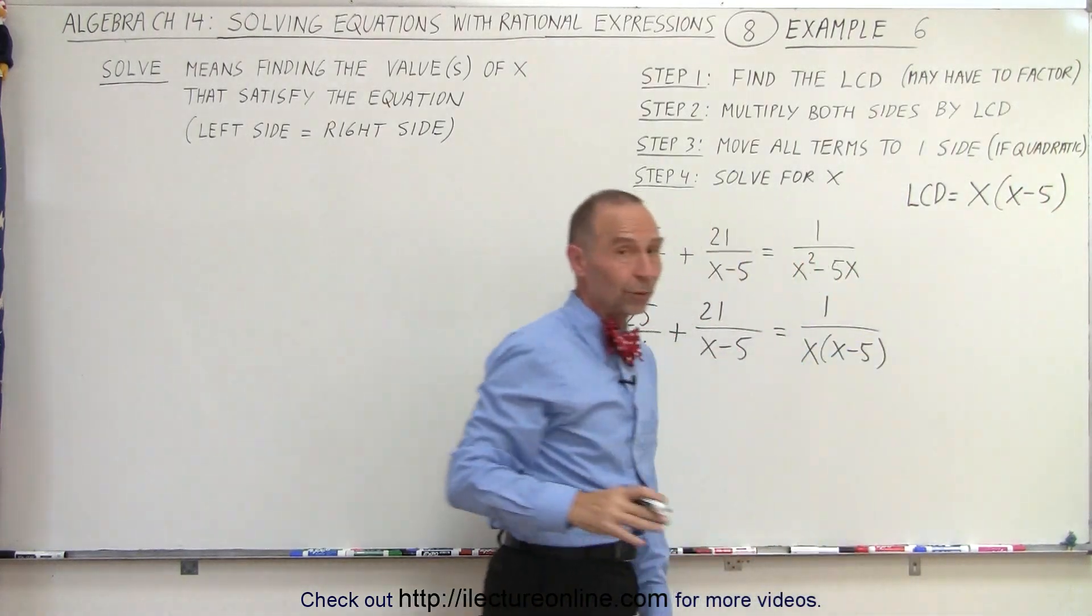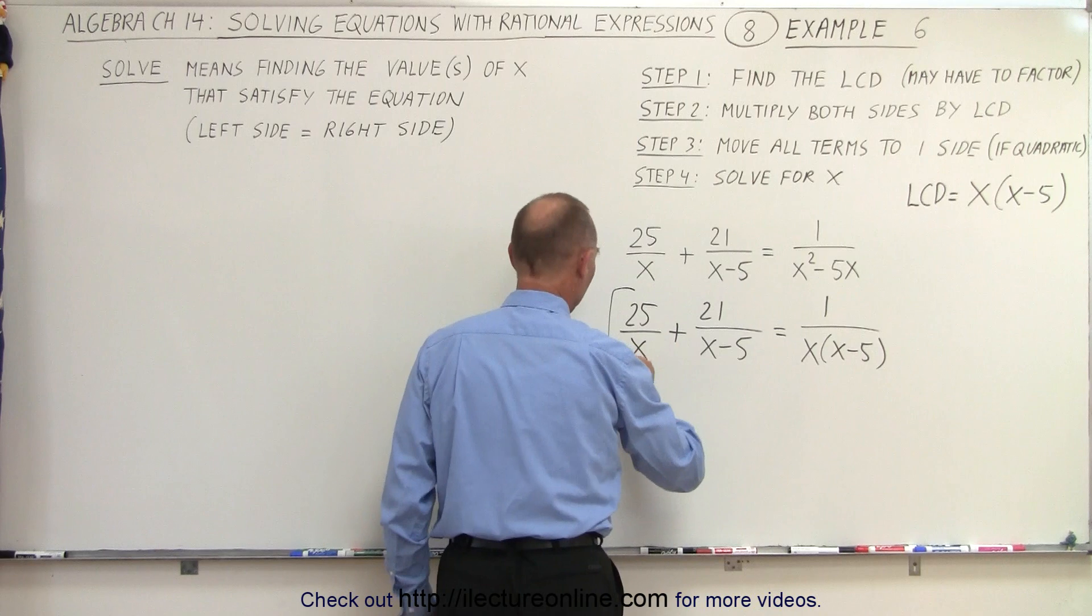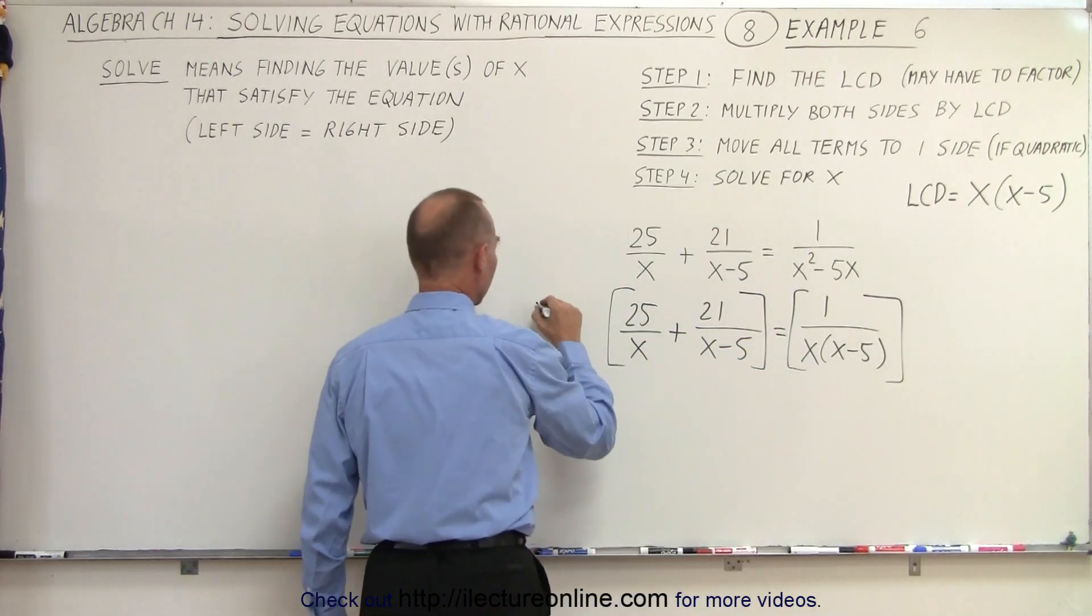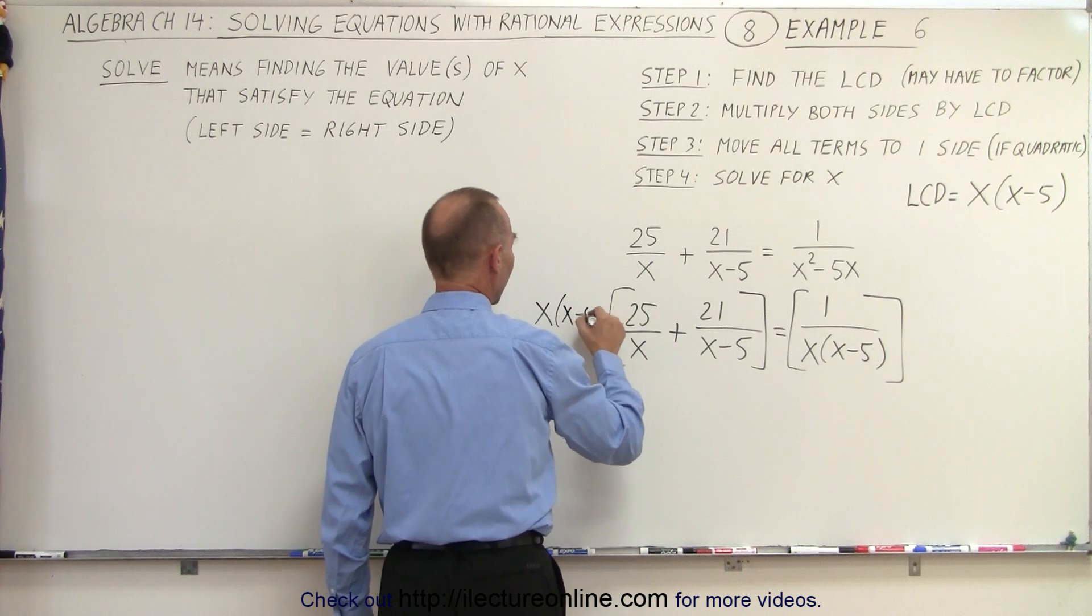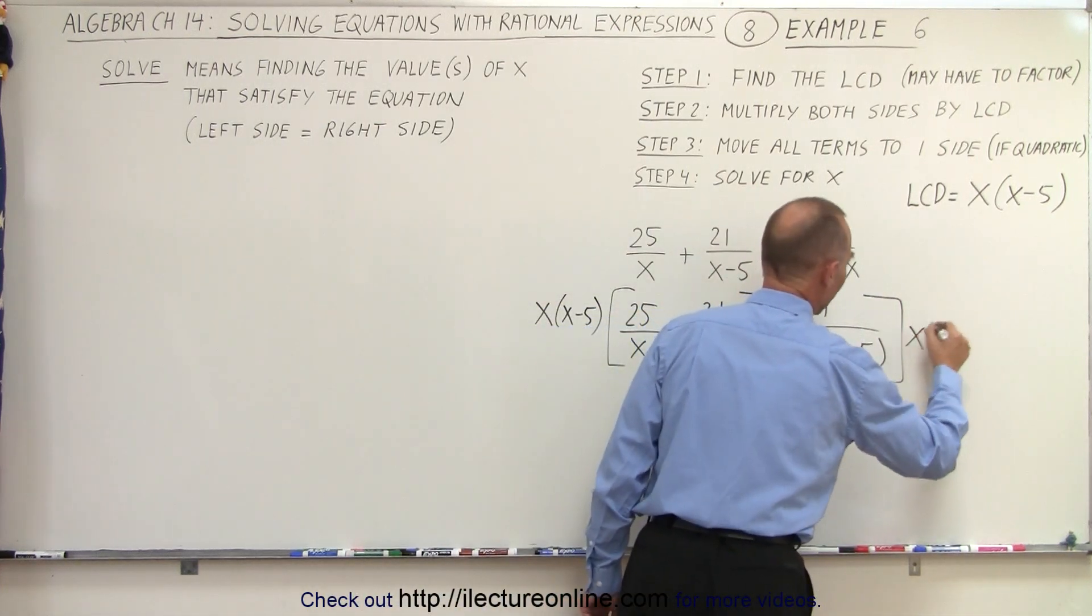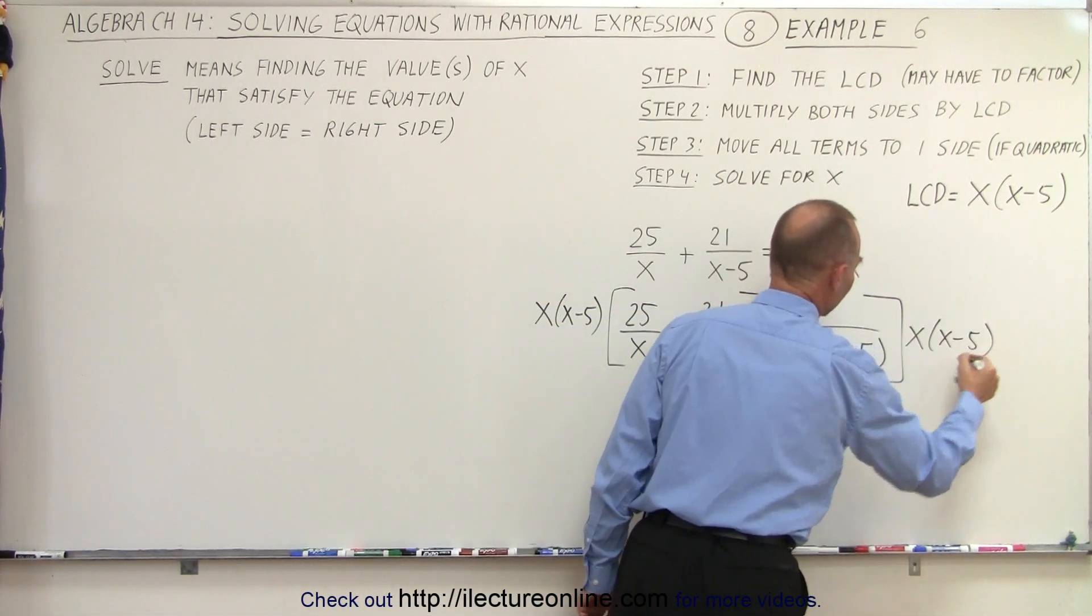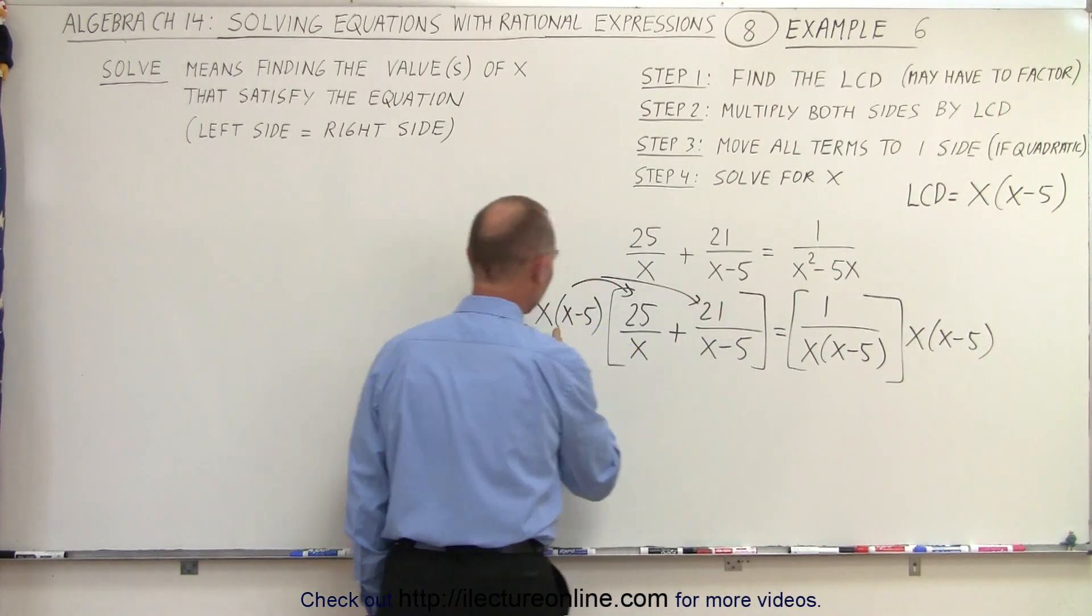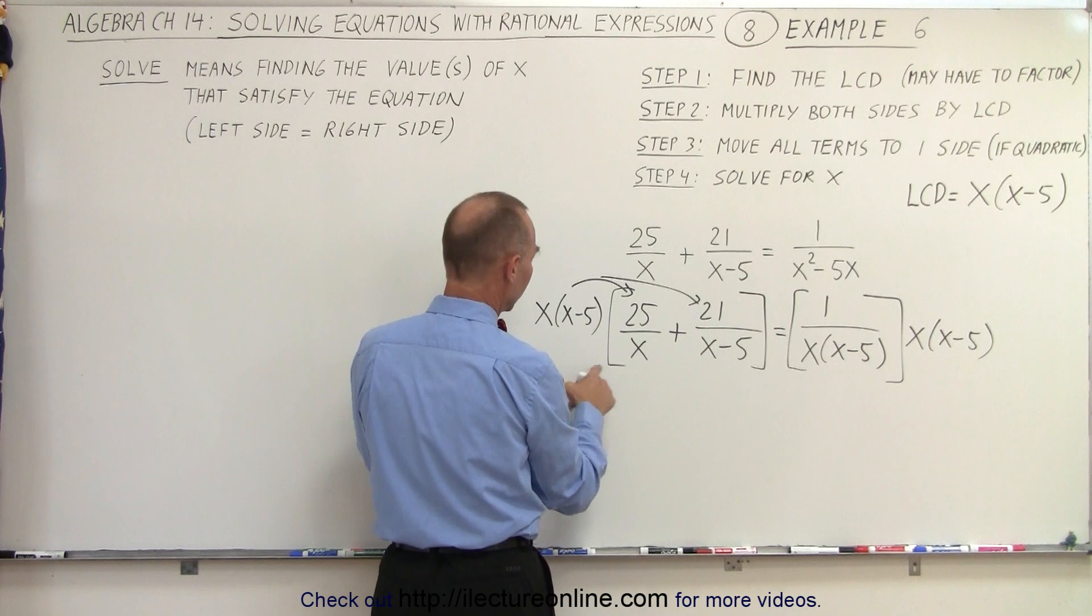Which means we're going to multiply both sides of the equation by that lowest common denominator. We get x times x minus 5 and x times x minus 5. On the left side we're going to multiply both of these terms by this common denominator.